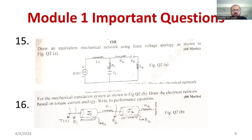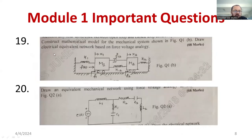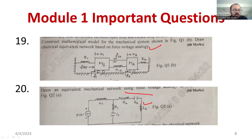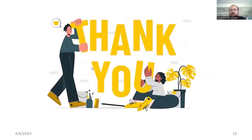I have already worked out many examples in my channel and will share the link. Further questions: for the mechanical system shown in figure Q1B, draw the mechanical network and obtain a force-voltage analogous electrical circuit. For the mechanical network shown in Q2C, derive the force-current analogous system. Another question: construct the mechanical model and draw the electrical equivalent network using force-voltage analogy. Also derive the torque-current analogy for a given rotational system.